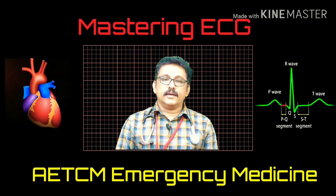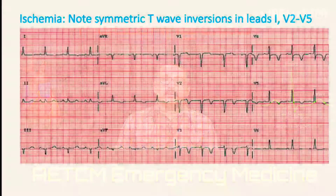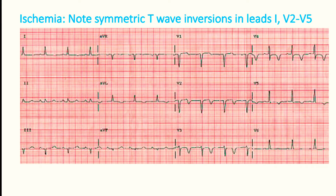Now we will see what changes can be produced by an ischemic condition. In this ECG you can see inverted T-waves in lead 1, V1, V2, V3, V4, V5, V6. Look at the T-waves: both the descending limb and ascending limb are equal — that is a sign of ischemia. If the T-waves are inverted and both the downgoing and upgoing limbs of the T-wave are equal, then you have to suspect ischemia.